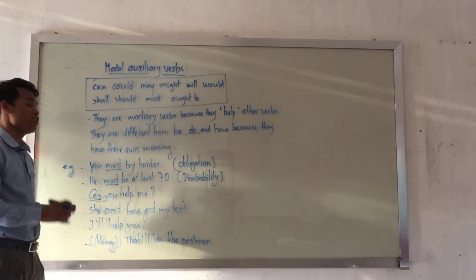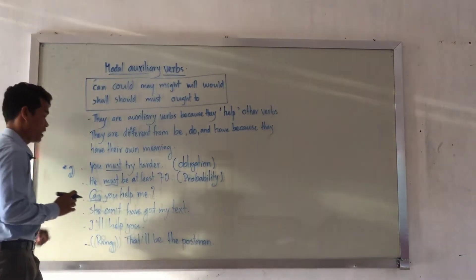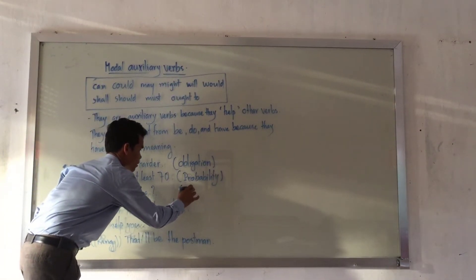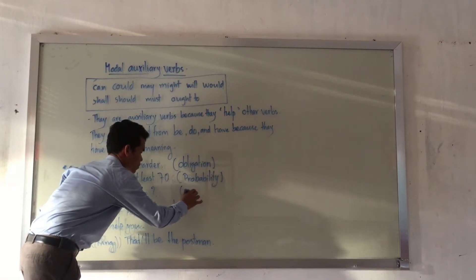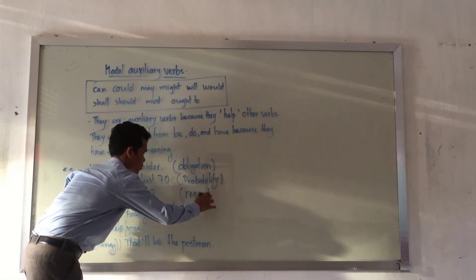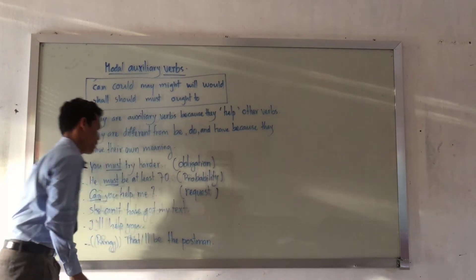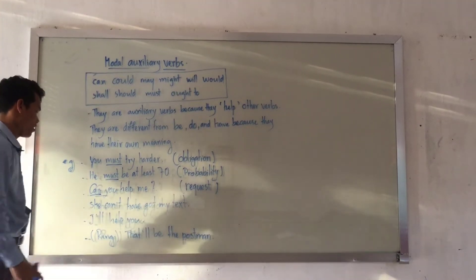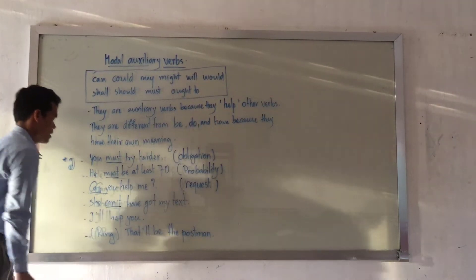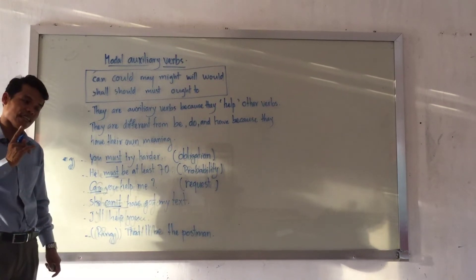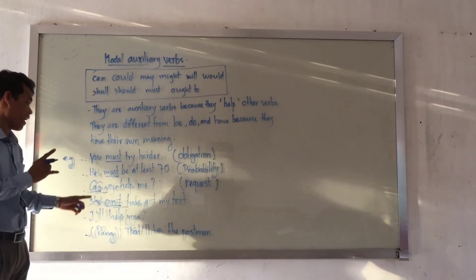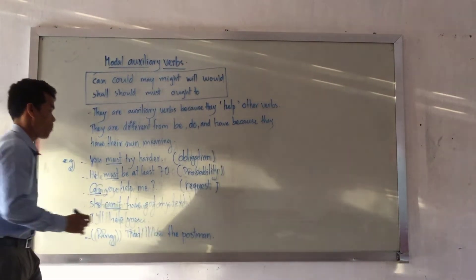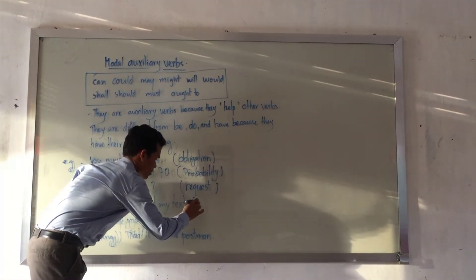'Can you help me?' Here 'can' is a modal auxiliary verb. When you say 'can you help me,' the meaning refers to a request — you are requesting something from somebody. Another example: 'She can't have got my text.' Here 'can' does not refer to ability; it refers to probability — she probably did not get the text.